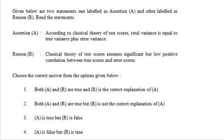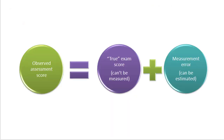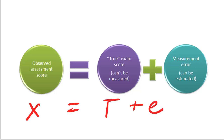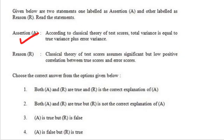Assertion: according to classical theory of test scores, total variance equals true variance plus error variance — this is correct. The observed assessment score X equals true score T plus error score, so assessment score is true score plus error score. Reason: classical theory of test scores assumes a significant but low positive correlation between true scores and error scores — this is not correct, there is no such low positive correlation. So A is true and R is false.